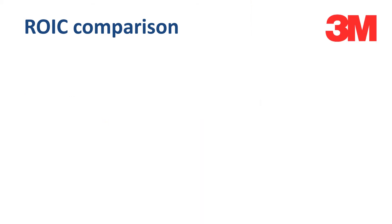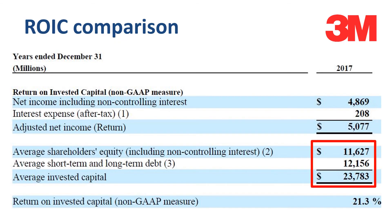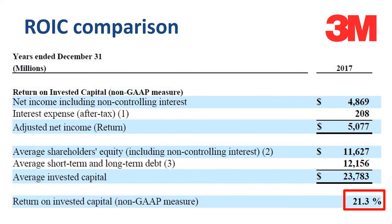3M ROIC: the numerator is net income plus after-tax interest expense. The denominator is average invested capital, which is the sum of average equity and average debt. The company actually uses the average of Q1, Q2, Q3, and Q4 ending equity and debt balances. The outcome of the calculation is 21% ROIC as per the 3M definition.